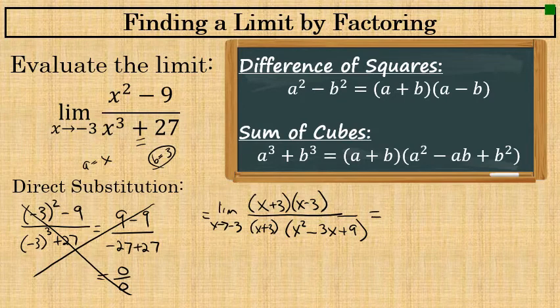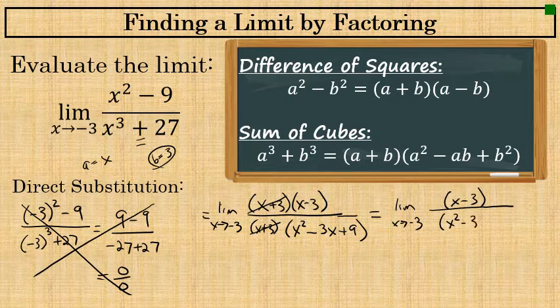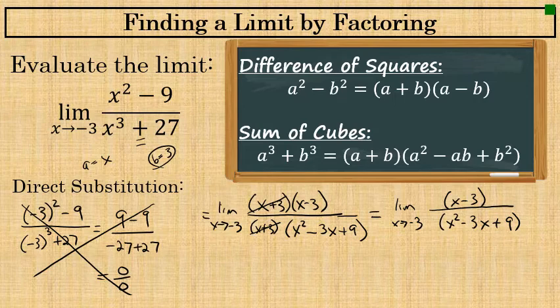Notice that in the numerator there is a factor of x plus 3 and in the denominator there is also a factor of x plus 3. Those cancel out, leaving the limit as x approaches negative 3 of x minus 3 over x squared minus 3x plus 9. Now that those factors have been eliminated, direct substitution will work.